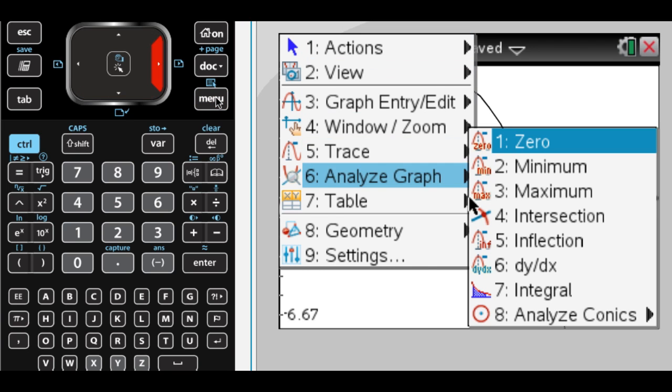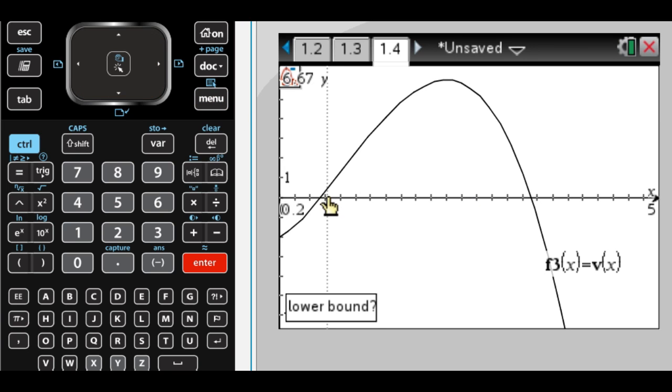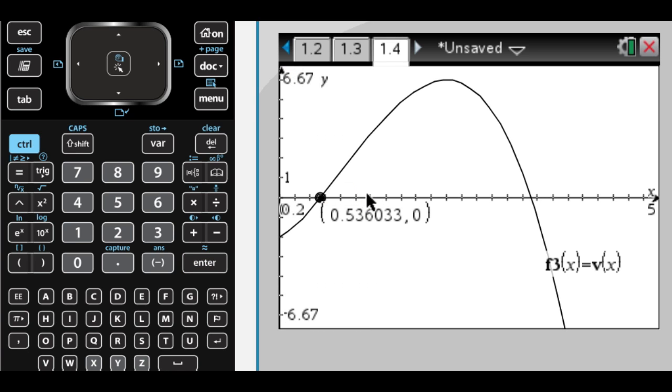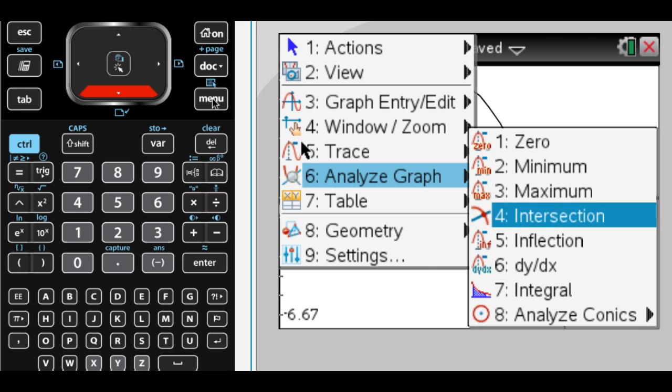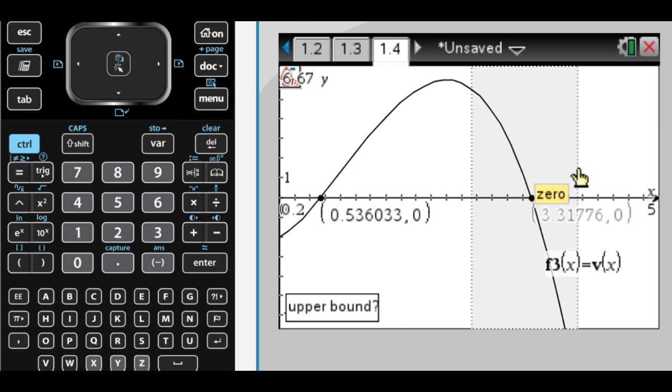And now I'm just looking for zeros. So analyze the graph, find a zero here to here, and repeat the process. Find the zero from here to here. So the particle changes direction when velocity has a sign change. Velocity has a sign change at t equals 0.536 and at 3.318. So that would be my answer to part C.